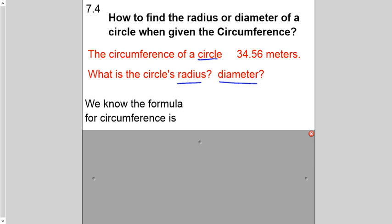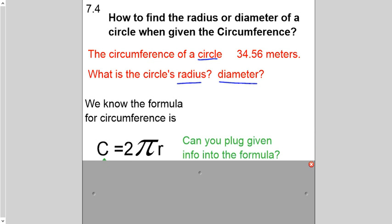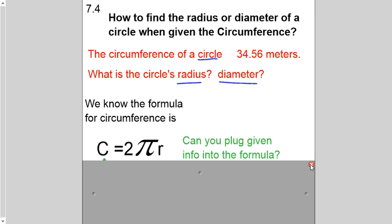Circumference is referring to the distance around a circle. And the first thing that I know is one of the formulas for circumference is circumference equals 2πr. So can we plug this information into this formula?